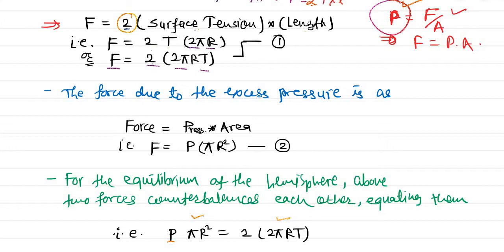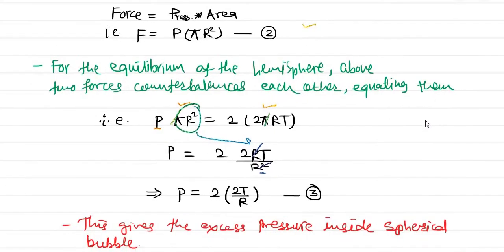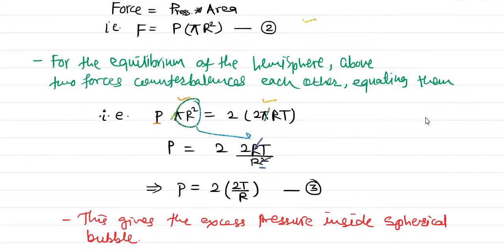Equating the two: 2 × 2πrT = P × πr². Cancelling π on both sides, then cancelling one r, we finally get the simple equation: P = 2 × (2T/r), which gives P = 4T/r.